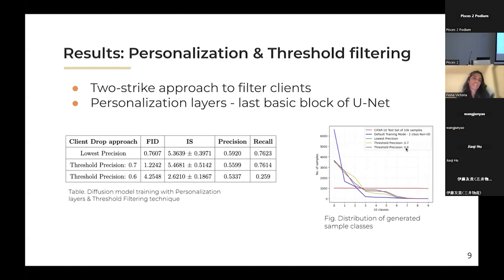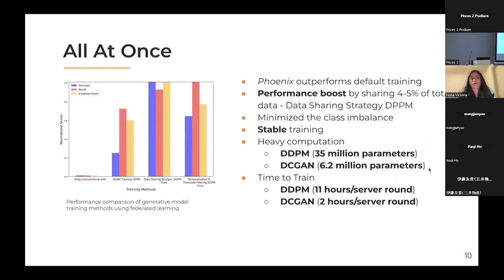We tried different approaches for the two-strike filtering: removing clients with the lowest precision, removing clients below a precision threshold of 0.7, and also using a threshold of 0.6. Putting all of these experiments together, we can say that Phoenix definitely outperforms the default training mode. By sharing just four to five percent of the global data in the first round, it significantly improves performance and also takes care of the class imbalance and non-IID issues.